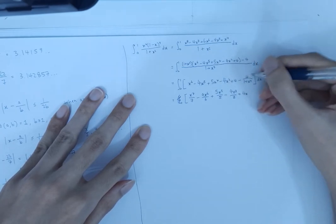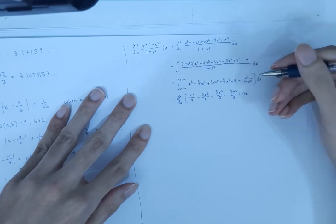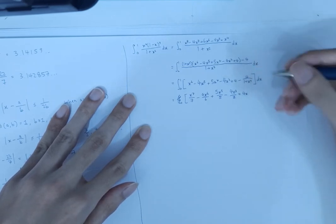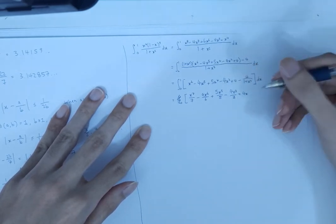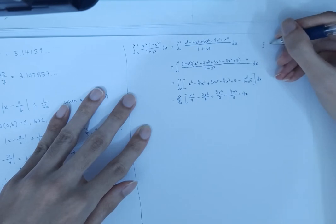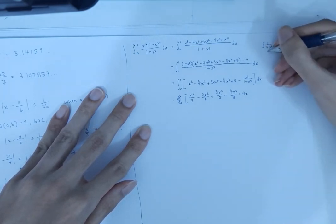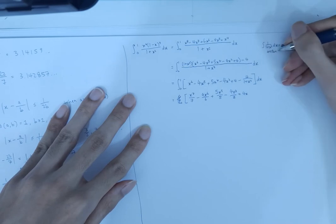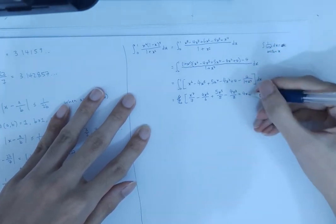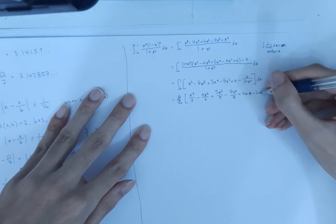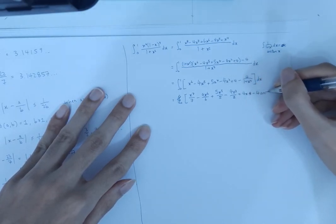And the way you integrate this is, well you basically have to already know what the integral of 1 over 1 plus x squared is, and the integral of that is the arctangent. Oh, I ran out of space on paper, arctangent of x.